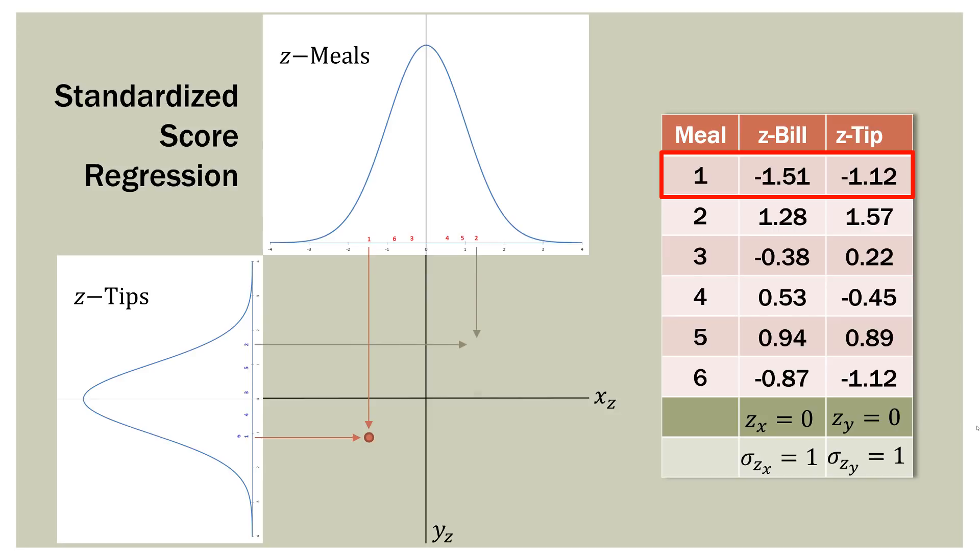Do the same thing for meal number two. You can see that we have 1.28 for the bill and 1.57 for the tip. So that's that point there. Now we can go ahead and just do the same thing for each meal and put that on our scatterplot. Every meal, in terms of standardized scores, has been plotted on this graph.